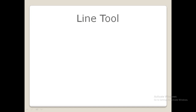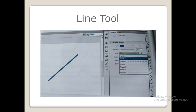First let us learn about the line tool. The line tool is present in our drawing tools. Using the drawing tools you can draw any ready-made shape and freehand drawing. This tool is used to draw a straight line. To use it, first select the line tool in the tools panel. Go to the properties panel and define the stroke color, line thickness, and line style in their respective fields.